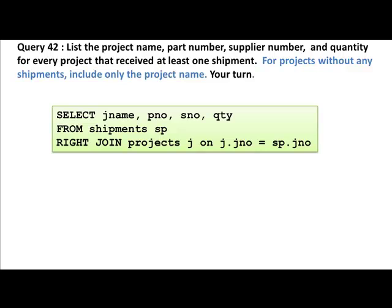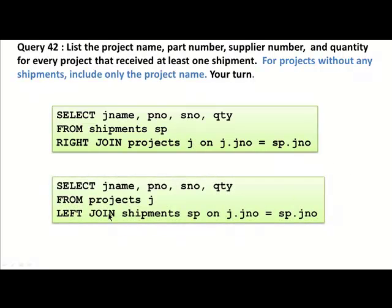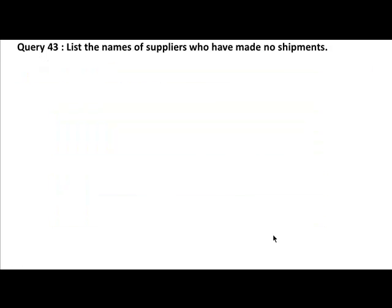We could write this in one of two ways — either a right join or a left join. If we mention the projects table second, then we do a right join; otherwise a left join. Here we say SELECT project name, part number, supply number, quantity FROM shipments JOIN projects — RIGHT JOIN because no matter what, we want all projects. For projects without any shipments, include the project name; those without matches will have null for part number, supply number, and quantity. The join is on the project number: J dot J_number equals SP dot J_number. SP and J are the aliases. Or you could write it with a left join, putting projects first and shipments later. Both produce the same results.